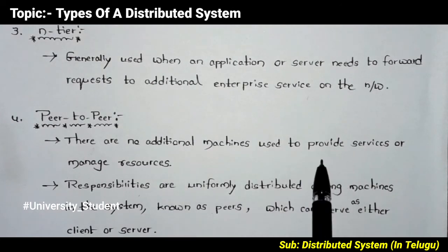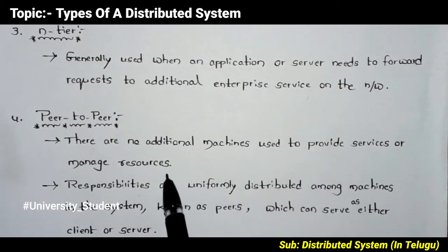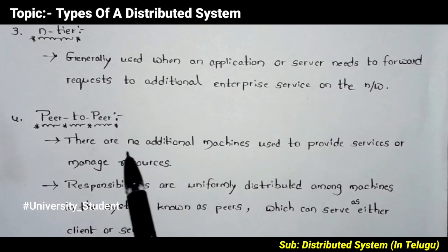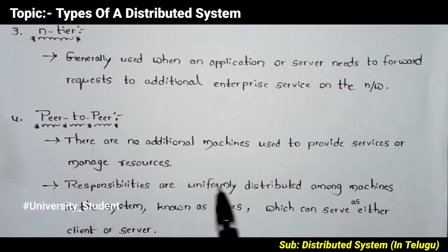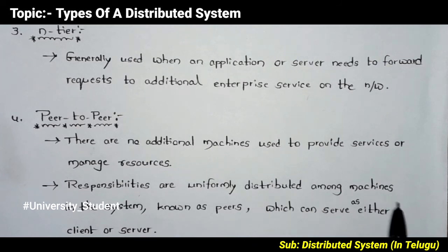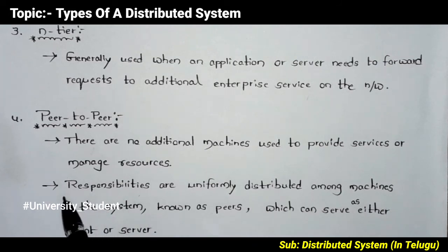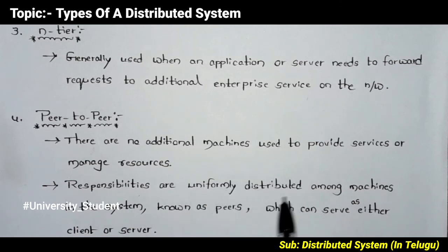In peer-to-peer, if services are provided and resources managed, we don't have additional machines. That's why responsibilities are uniformly distributed among machines in the system.